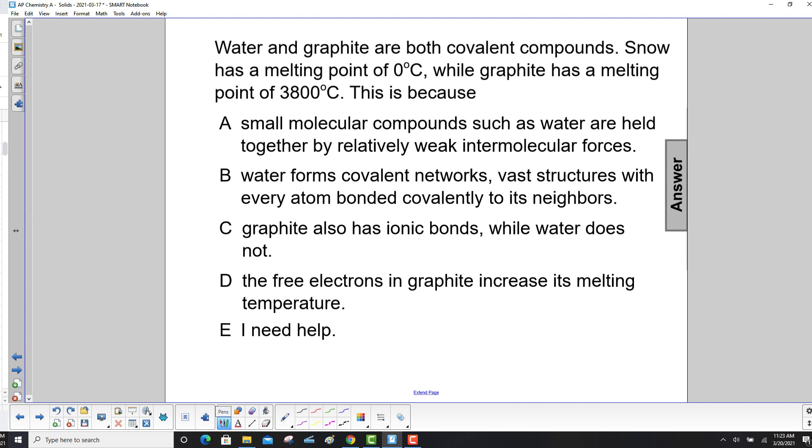Water and graphite are both covalent compounds. Snow has a melting point of 0°C while graphite has a melting point of 3,800°C. This is because small molecular compounds such as water are held together by relatively weak intermolecular forces. Yep, that's it right there.